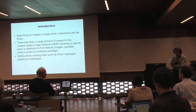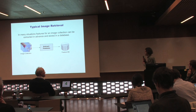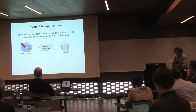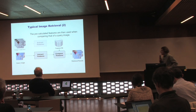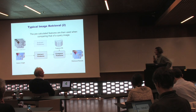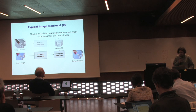Typical content-based image retrieval works as follows: we have a potentially large image collection from which we extract various features, and store those features as indices in a database. When performing retrieval in query-by-example fashion, we extract the same features from the query image, compare them with all features from the dataset, rank them based on similarity, and that gives us the retrieval results.